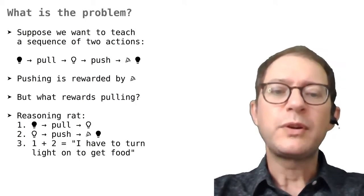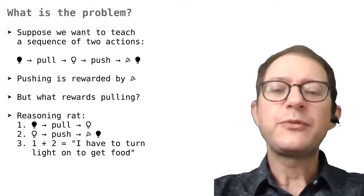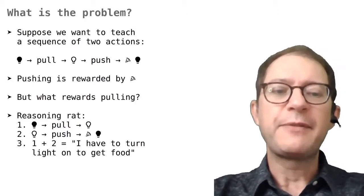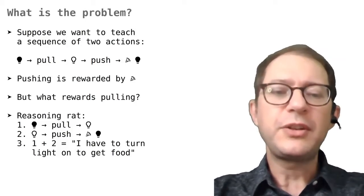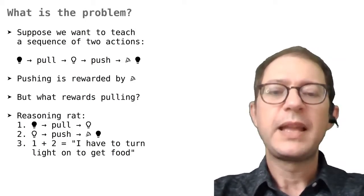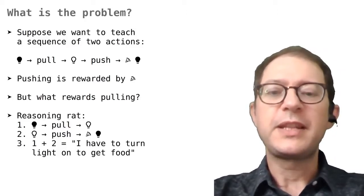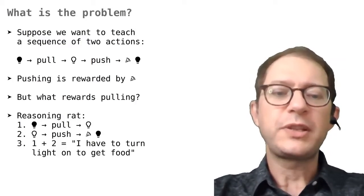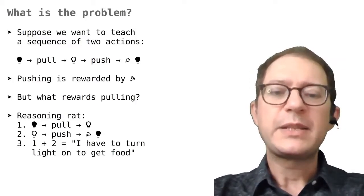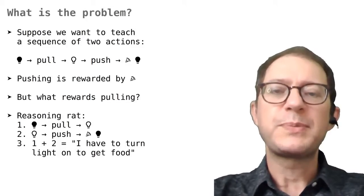One way it could work — which I call the reasoning rat — is that the rat could first notice that pushing the lever works only when the light is on, then notice it can turn on the light by pulling the chain, and put these two things together to reason it must first pull the chain and then press the lever. But we are not sure rats can reason this way, and experimental psychologists have realized that the simpler way to learn sequences is by using conditioned reinforcement.